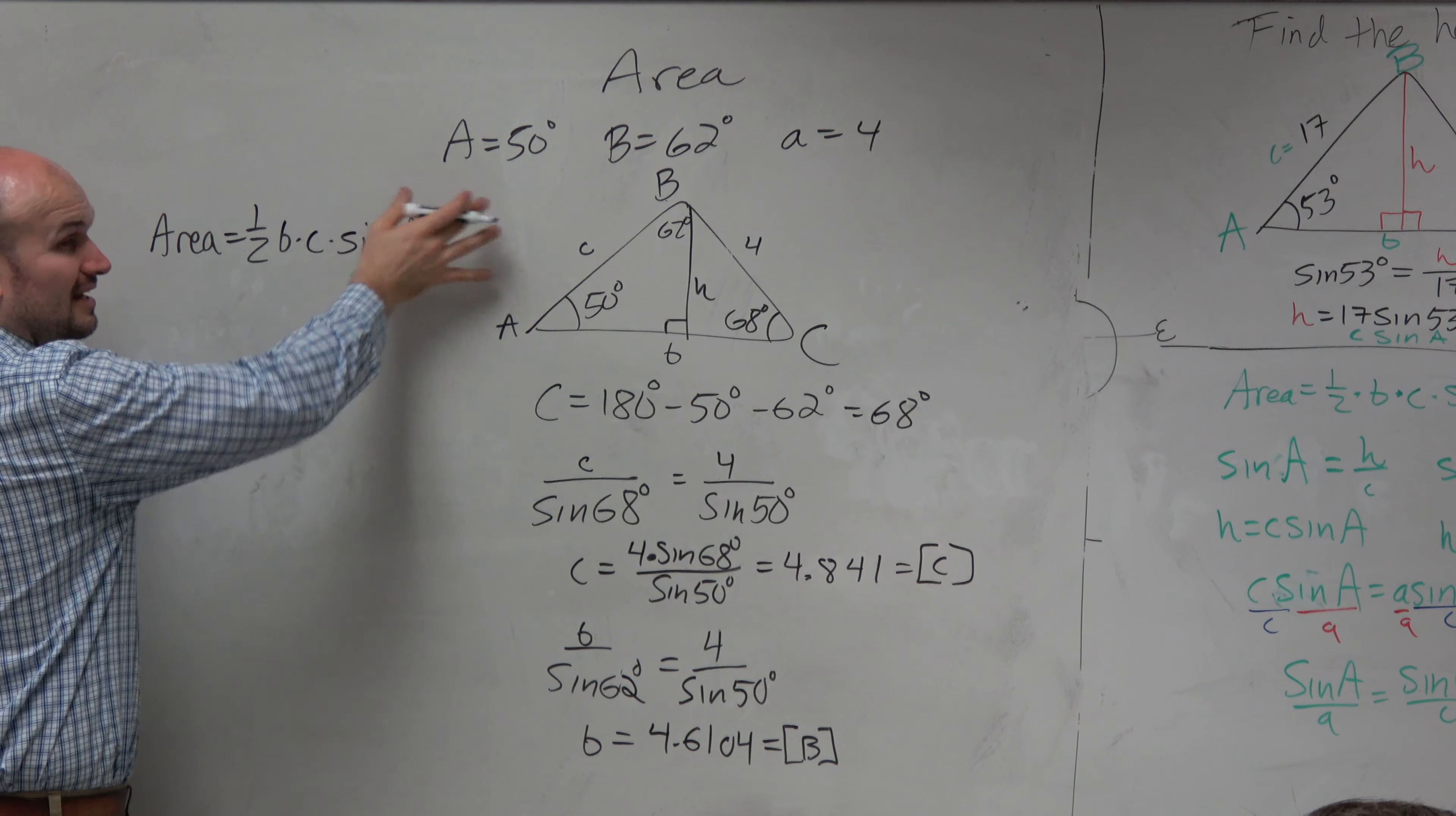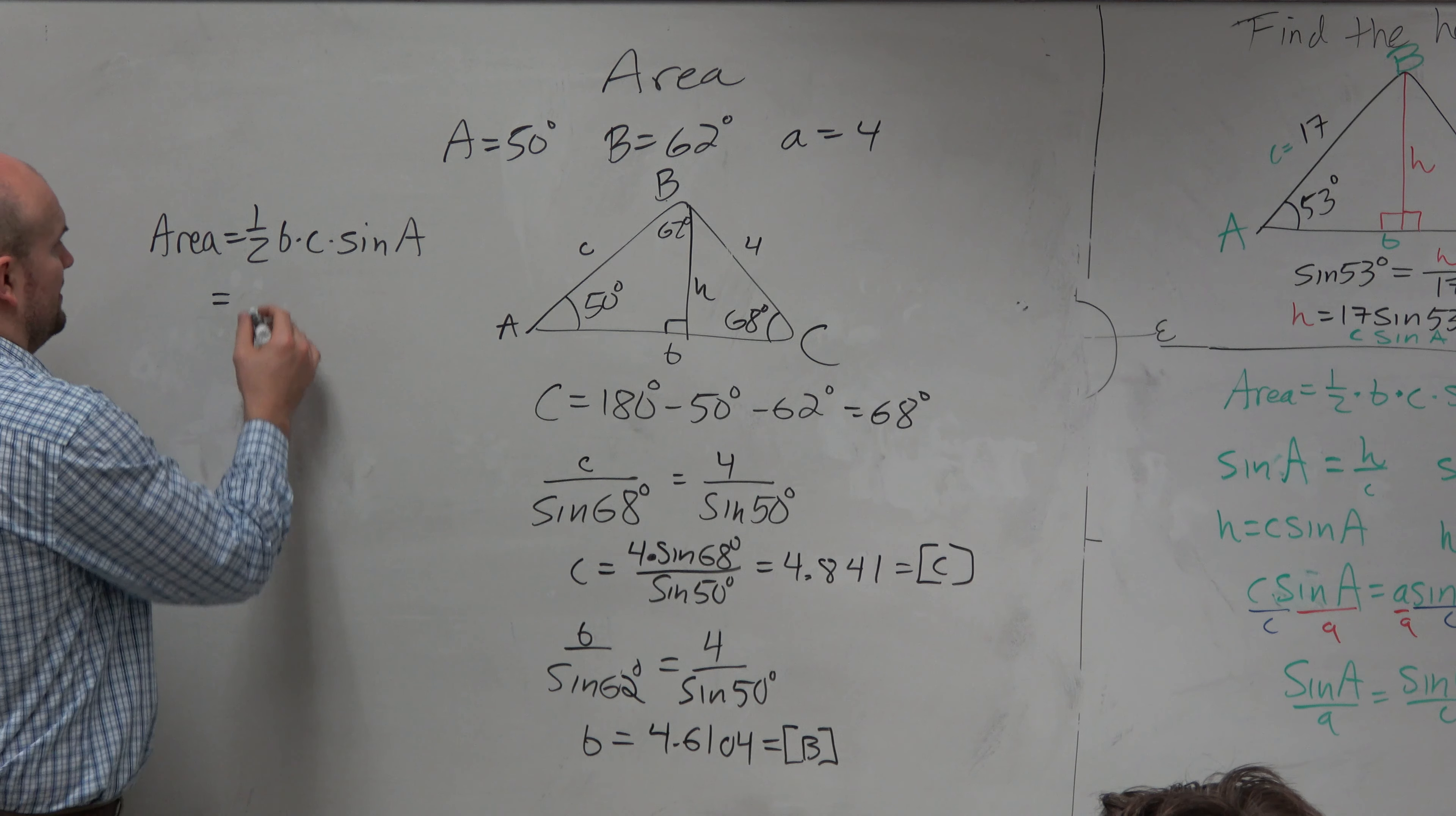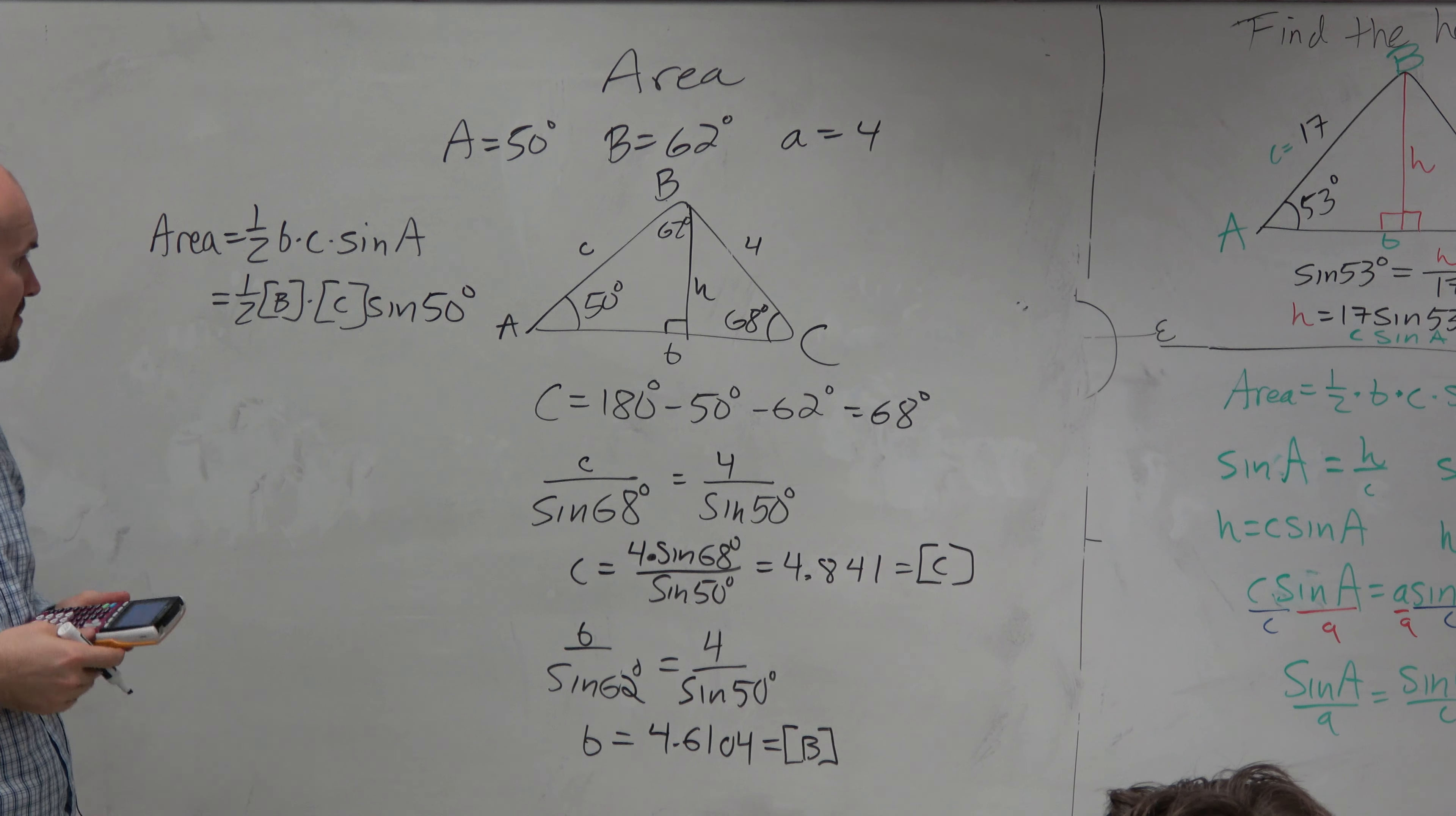So my area is 1 half B times C times sine of A. Now, again, guys, this is just based on our, like, all these could be all written. Like if I gave you angle B and C, you could still do the same problem. You just rearrange the letters, OK? Don't be fixated on the letters. So this is 1 half.